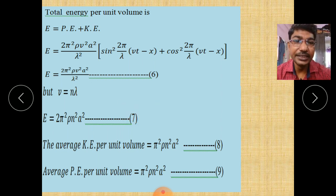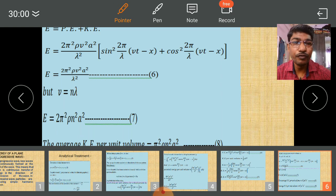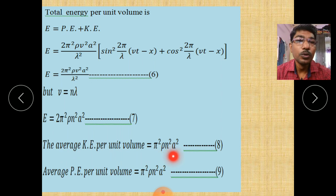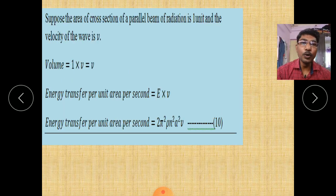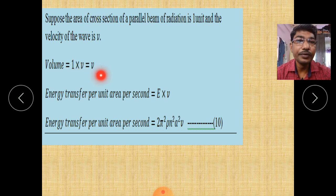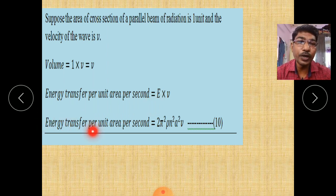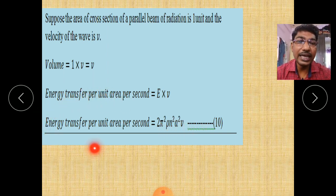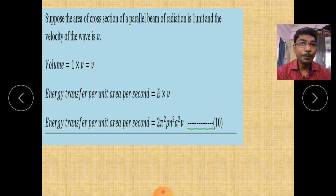The average energy per unit volume for kinetic as well as potential energy is half of the total value. Average kinetic energy per unit volume = π²ρn²a², and potential energy has the same value. Now, suppose the area of cross section of a parallel beam of radiation is 1 unit and the velocity of the wave is v. Therefore, the energy transfer per unit area per second = E × v = 2π²ρn²a²v. This is the total energy transfer per unit area per second — this is the energy of a plane progressive wave.